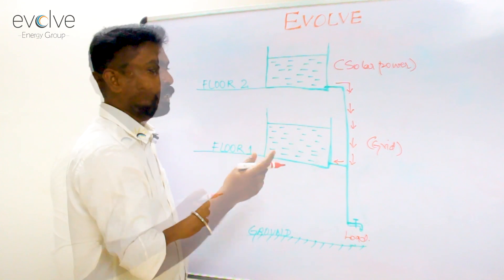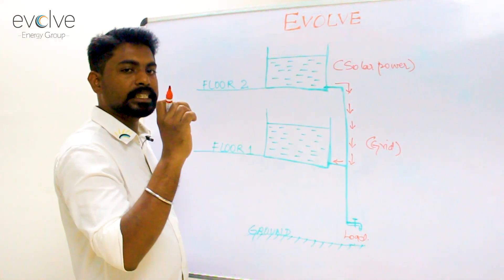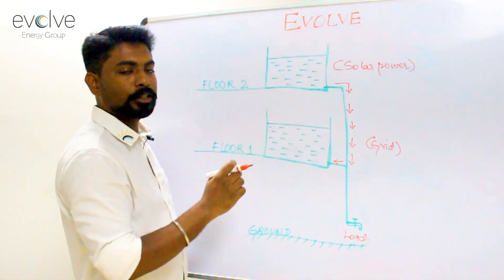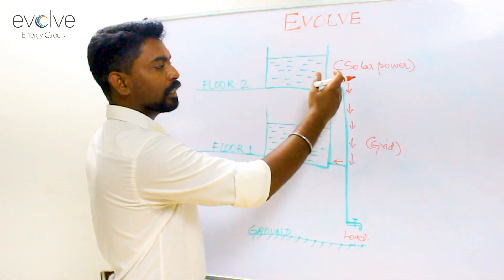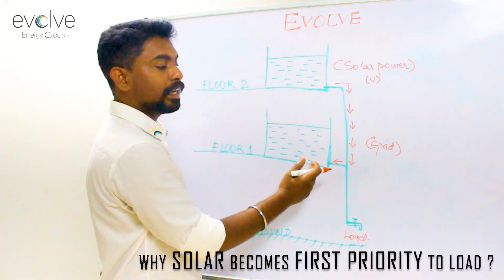Why I say this is because the on-grid inverters produce a voltage which is a little bit higher than the voltage in the grid. They take reference of the grid voltage and produce a voltage which is at a higher potential than the grid.